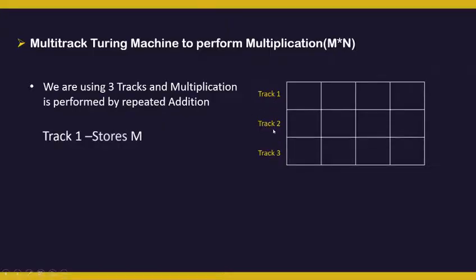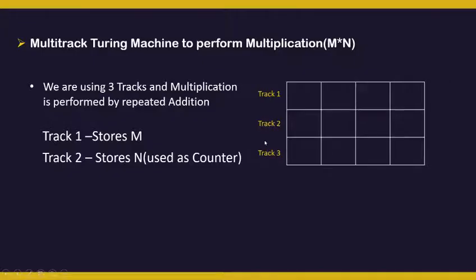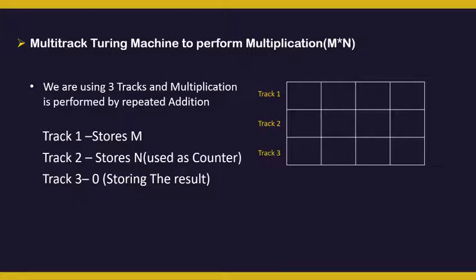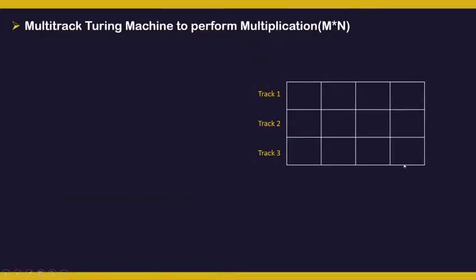We use track 1 to store the m value, track 2 to store the n value, and track 3 to store the result. Initially we will be placing 0 in track 3 followed by blanks.